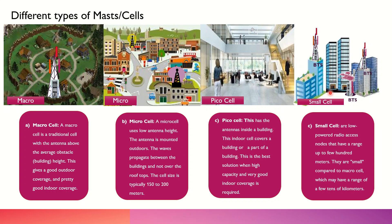Small cells play a vital role especially in higher frequency bands like 5G, because macro sites at very high frequencies cannot penetrate much. Physics tells us that at higher frequency bands, the wavelength is shorter, resulting in restricted coverage. Therefore, small cells are used in higher frequency bands, precisely in millimeter wave 5G. These are the different types of masts that can be deployed in a telecom network.